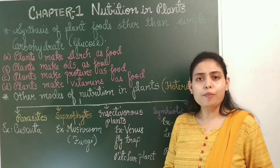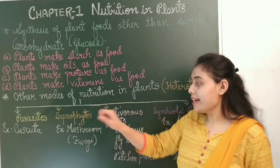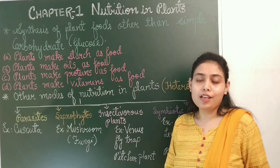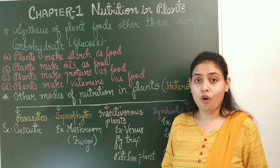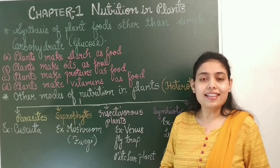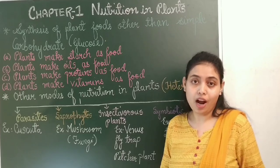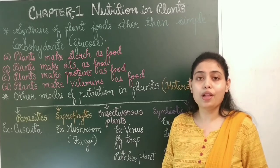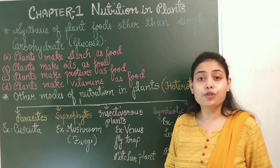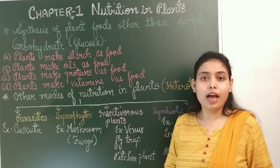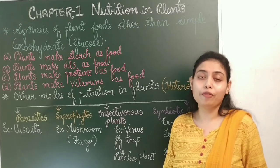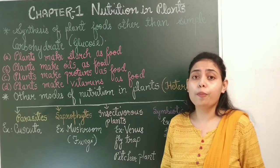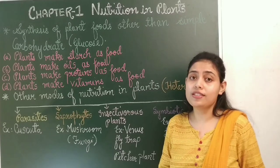Second mode: saprophytes. Those non-green plants which obtain their food from dead and decaying organisms are called saprophytes. For example, mushrooms. Mushrooms are white in color and do not have chlorophyll, so they cannot perform photosynthesis.